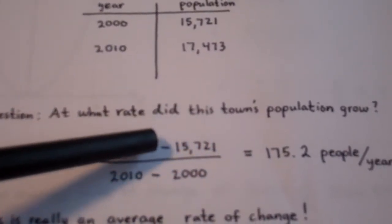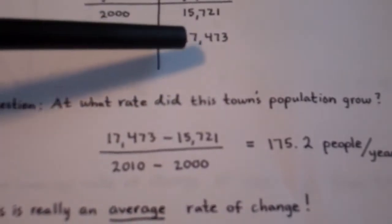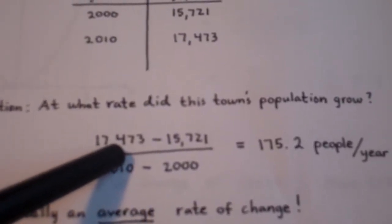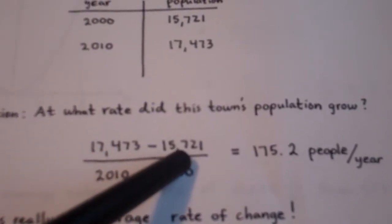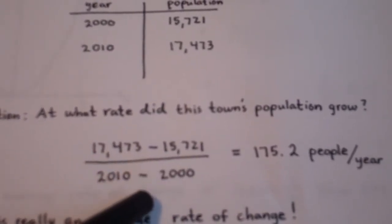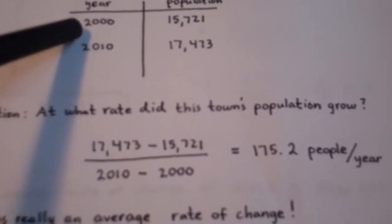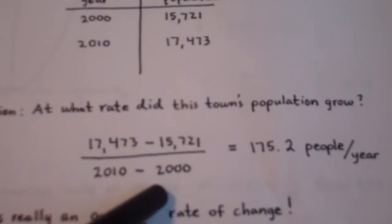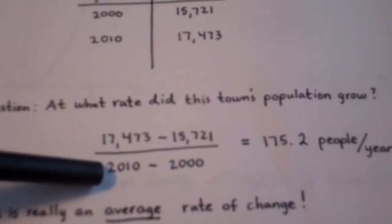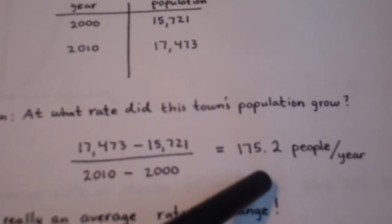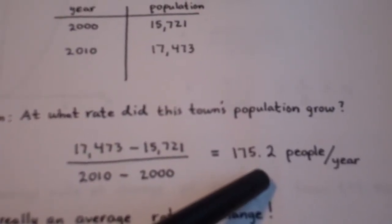To calculate this, we simply find the change in the population, which would be the population in 2010 minus the population in 2000, and we divide that by the change in the years, which in this case would be 10. So when we take the change in the population divided by the change in time, we get 175.2 people per year as the growth rate.